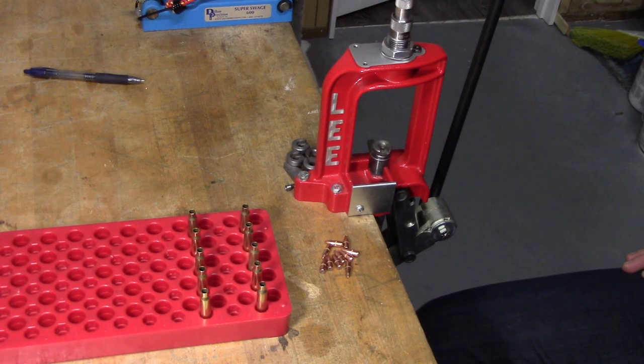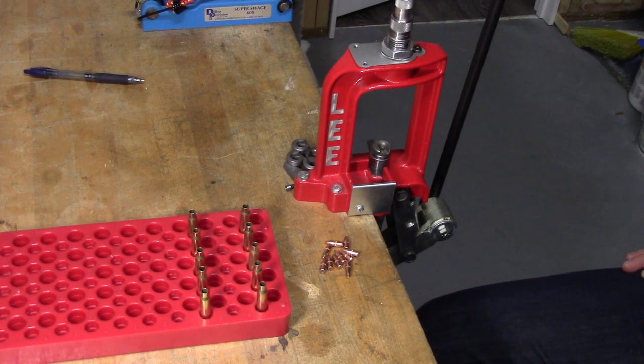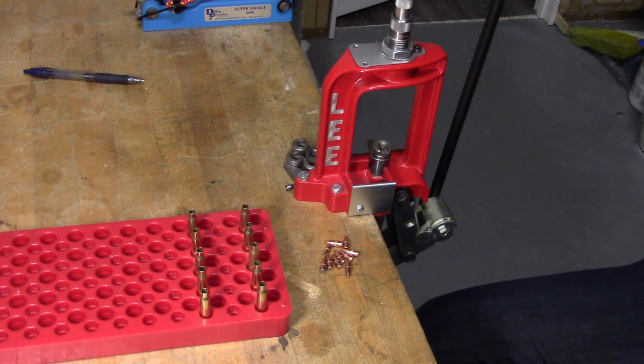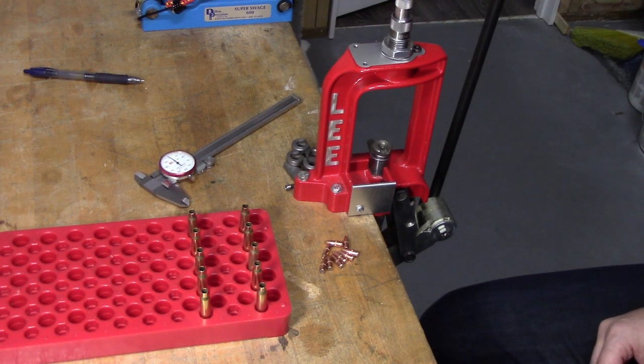If you remember in our loading manual, the overall length for this was a suggested 2.200 inches, so that's what we're going to shoot for. You're going to need some calipers for this. Once again I'll use my Hornady analog gauge. Alright, let's begin.